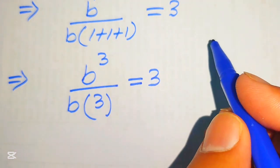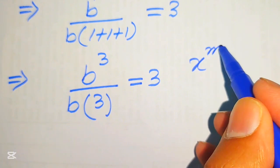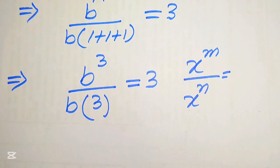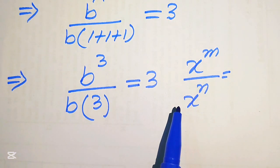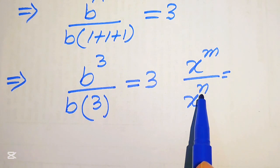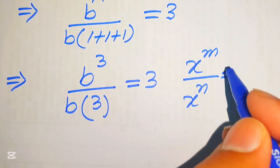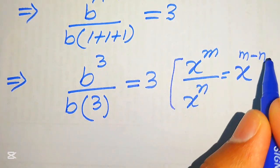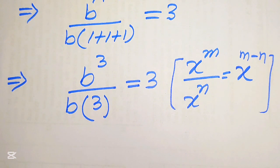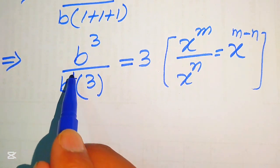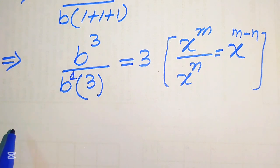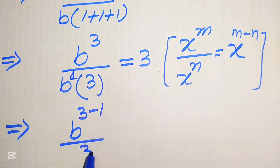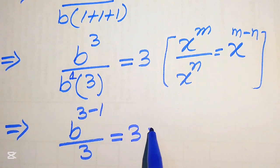Now we apply a second exponent law: if you have x to the power of m divided by x to the power of n, and the bases are the same, we subtract the exponent of the denominator from the numerator, giving x to the power of m minus n. Applying this rule here, the b in the denominator has exponent 1, so we get b to the power of 3 minus 1, divided by 3, equals 3.